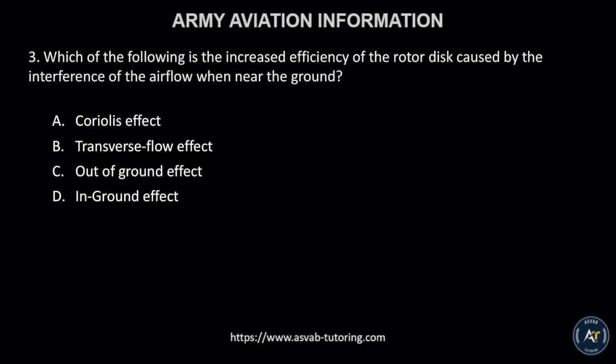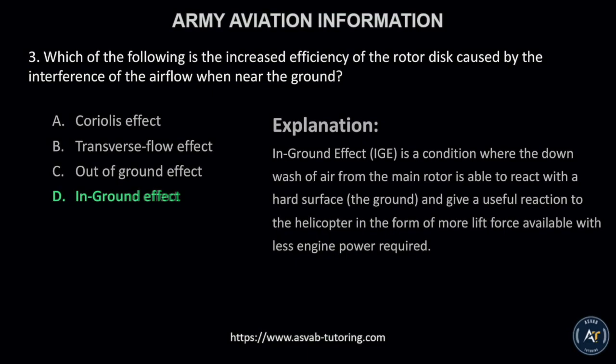Number 3. Which of the following is the increased efficiency of the rotor disk caused by the interference of the airflow when near the ground? A, Coriolis effect; B, transverse flow effect; C, out-of-ground effect; or D, in-ground effect? The correct answer is letter D, in-ground effect.